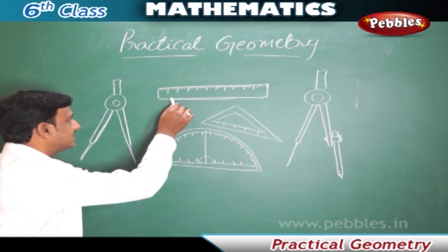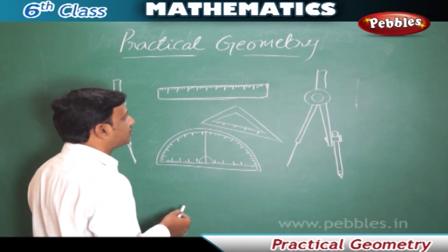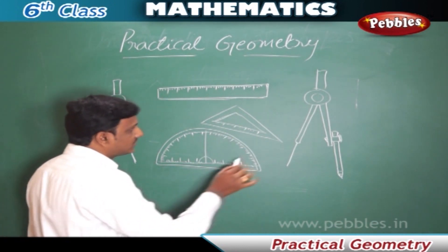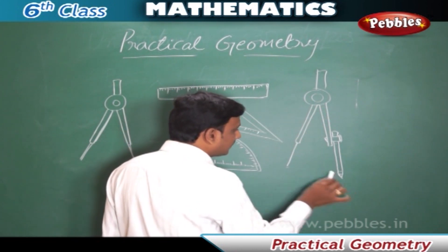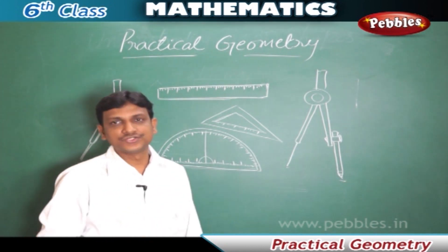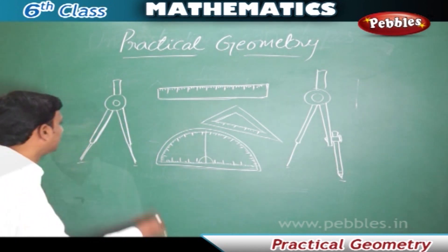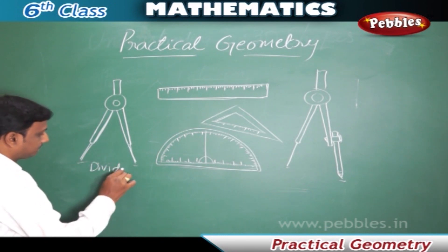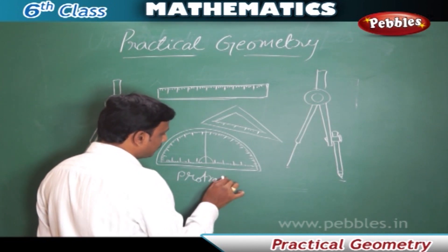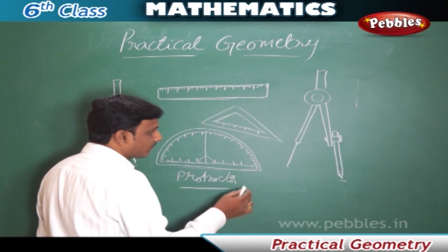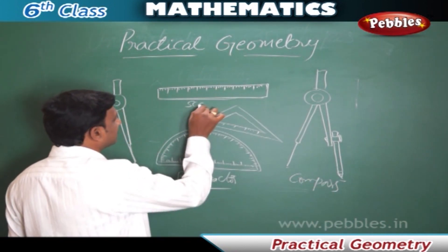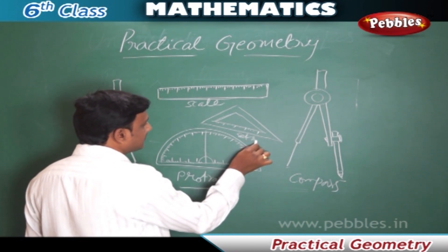Here we have a scale, this is a graduated measuring scale, a set square, a protractor, a compass, and a divider. By using these, we can draw the geometrical shapes. This is a divider, this is a protractor, this is a compass, this is a scale, and this is a set square.